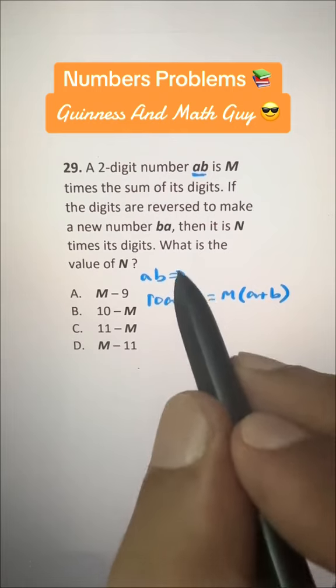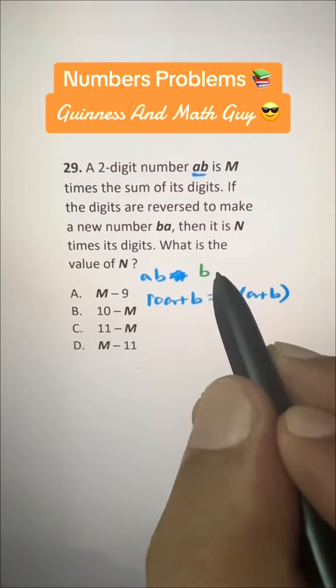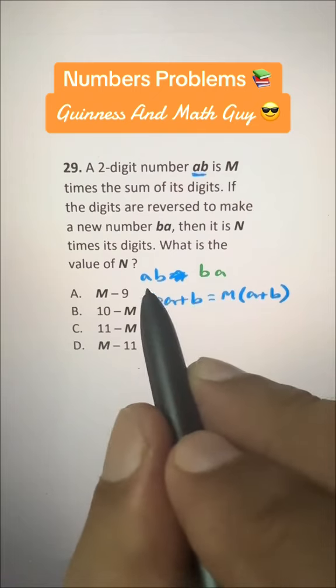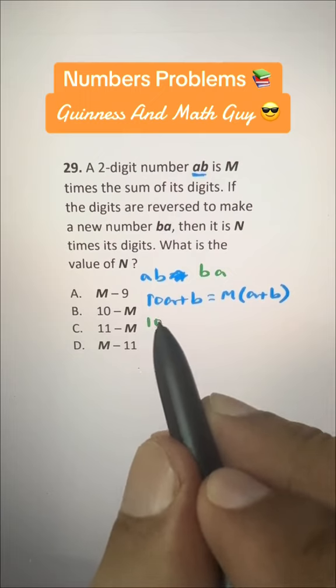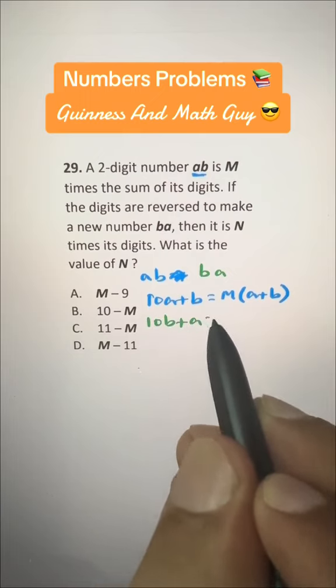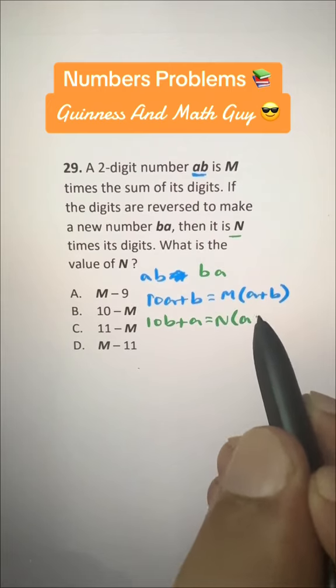And let's do the next number that is formed by reversing the digits of AB, BA. It will be 10B plus A and that is N times its digits.